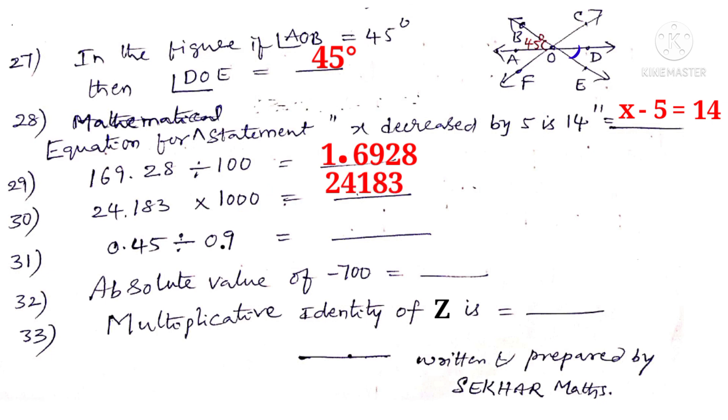Now 31. 0.45 divided by 0.9 is equal to. Observe that the numerator has two decimal points. Denominator has one decimal point. So the quotient has one decimal point. That is 0.5.